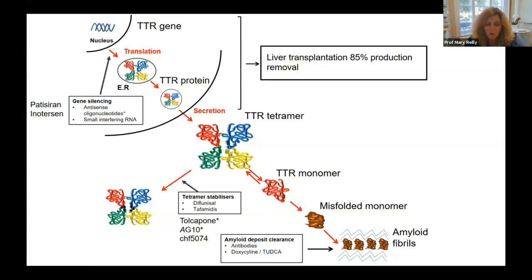When patients have a diagnosis of TTR amyloidosis, we now need to diagnose the neuropathy as early as possible, because the evidence is that treating the neuropathy early is the best way to do it — it prevents damage.